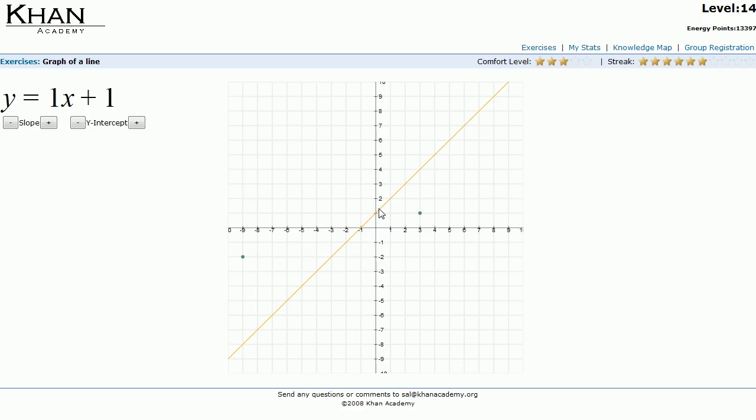Let's do another one. This is a fun module because there's no wrong answers. You can just keep messing with it until you eventually get that line to go through both of those points. But the idea is really to give you that intuition, that the slope is just what the inclination of the line is, and then the y-intercept is how far up and down it gets shifted.